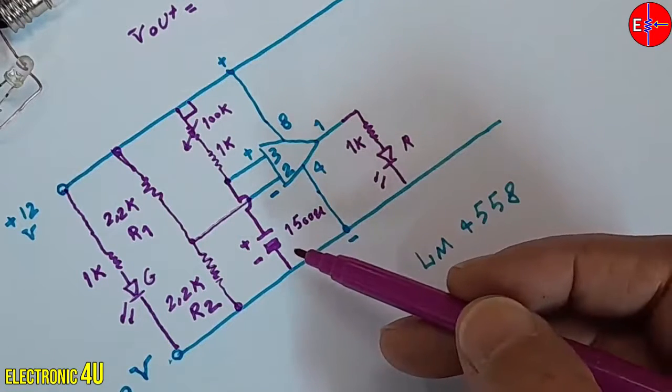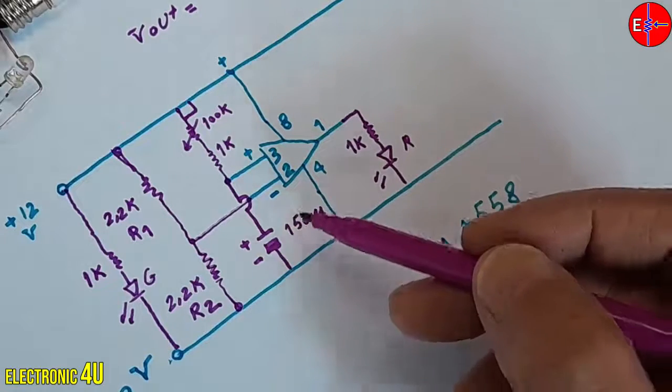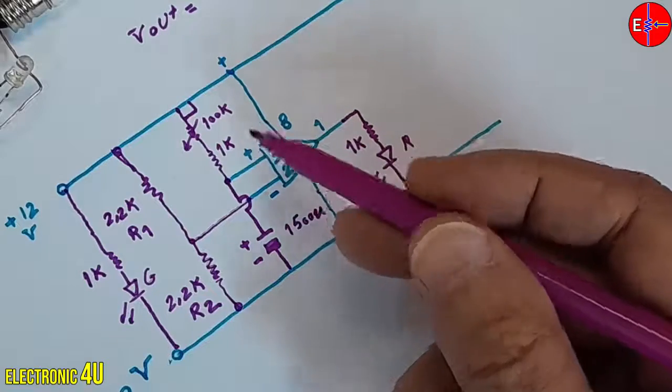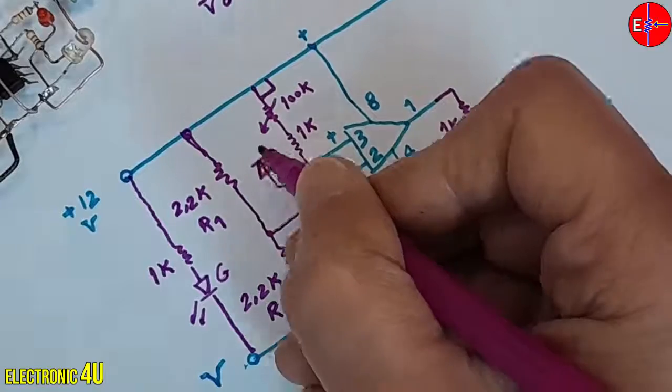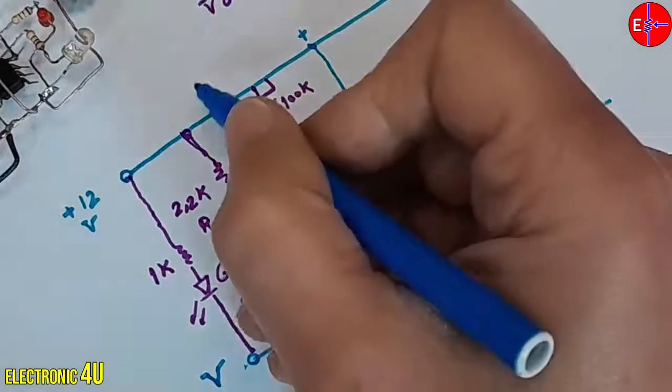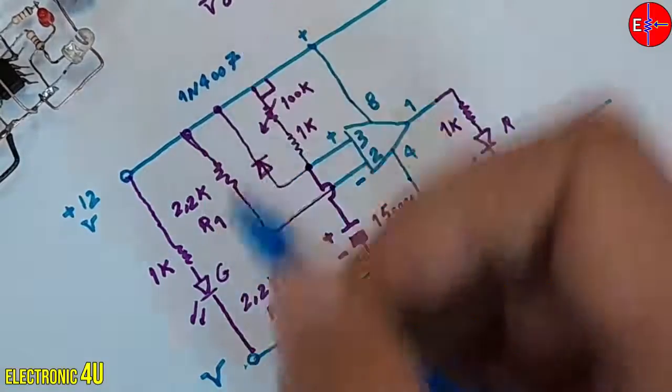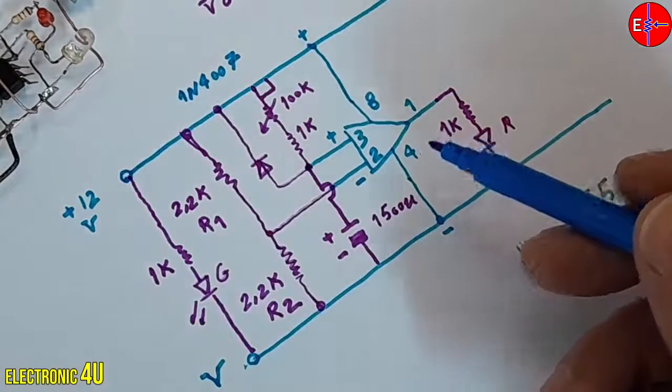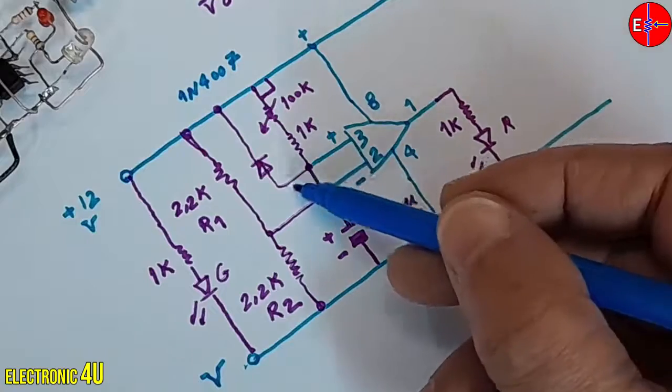To discharge the capacitor quickly, we use a diode. Connect the diode anode to the non-inverting input. And connect the cathode directly to the input voltage. The diode number can be 1N4007. When the circuit voltage is cut off, the voltage stored in the capacitor will quickly discharge through this diode.